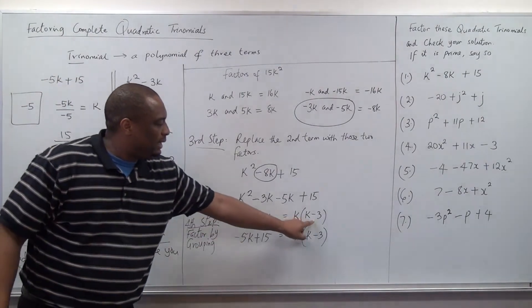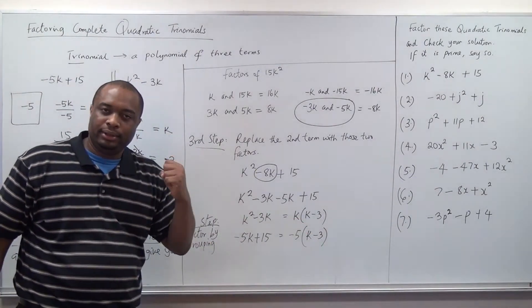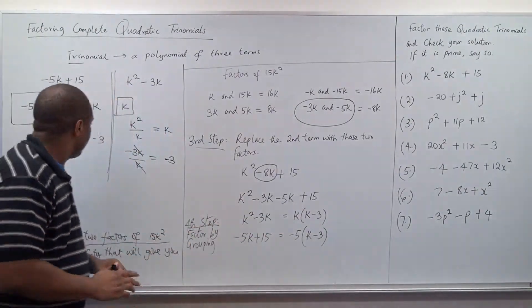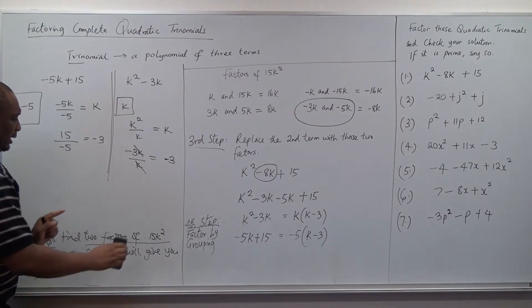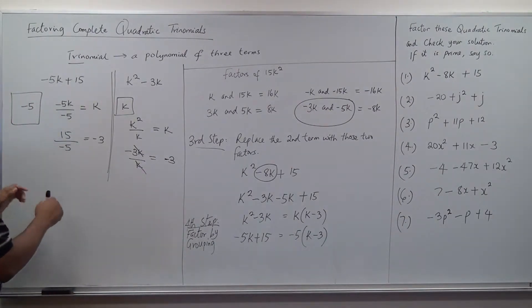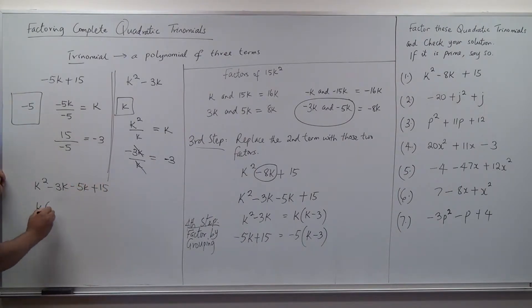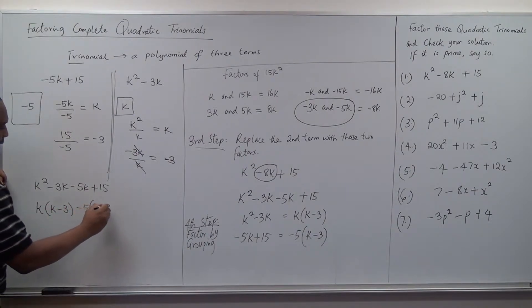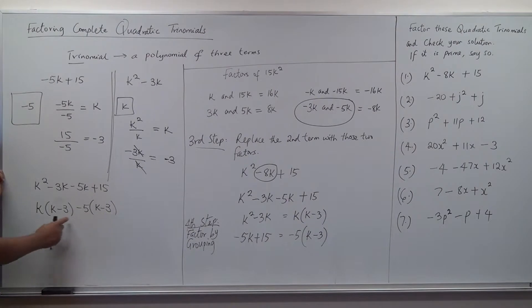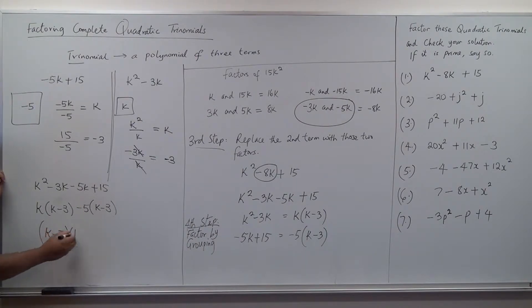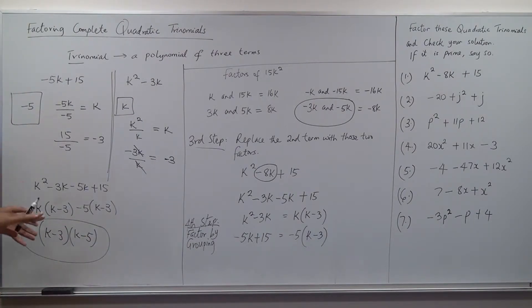When you see that the bracket in both groups is equal — both give k minus 3 — that is when you know you're getting it right. So k squared minus 3k minus 5k plus 15 is the same as k(k minus 3) minus 5(k minus 3). Then factoring by grouping gives us k minus 3 times k minus 5. This is your answer. I will check it first, and after checking I will show you another way.